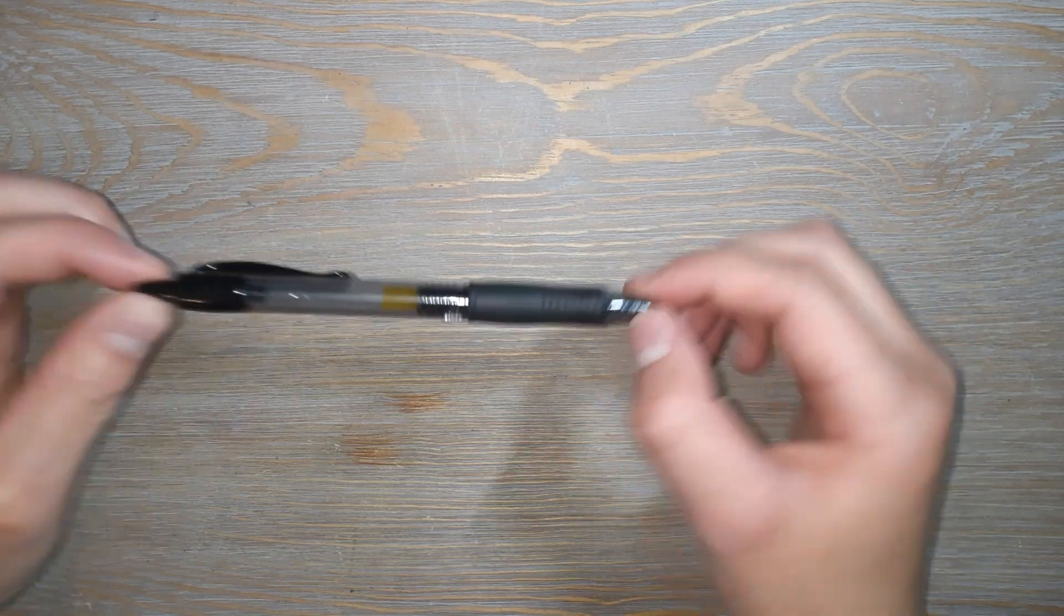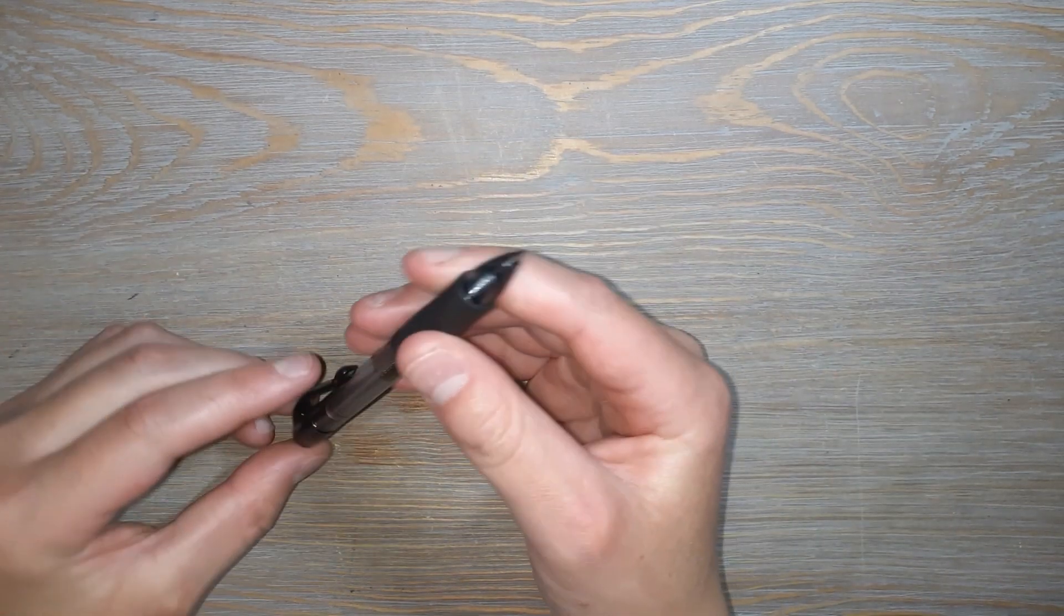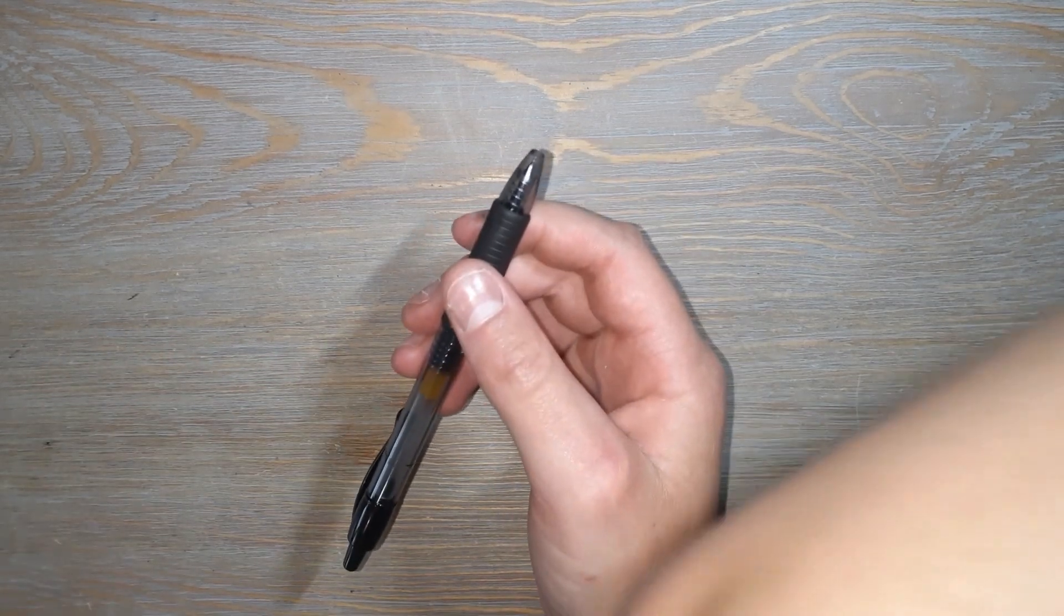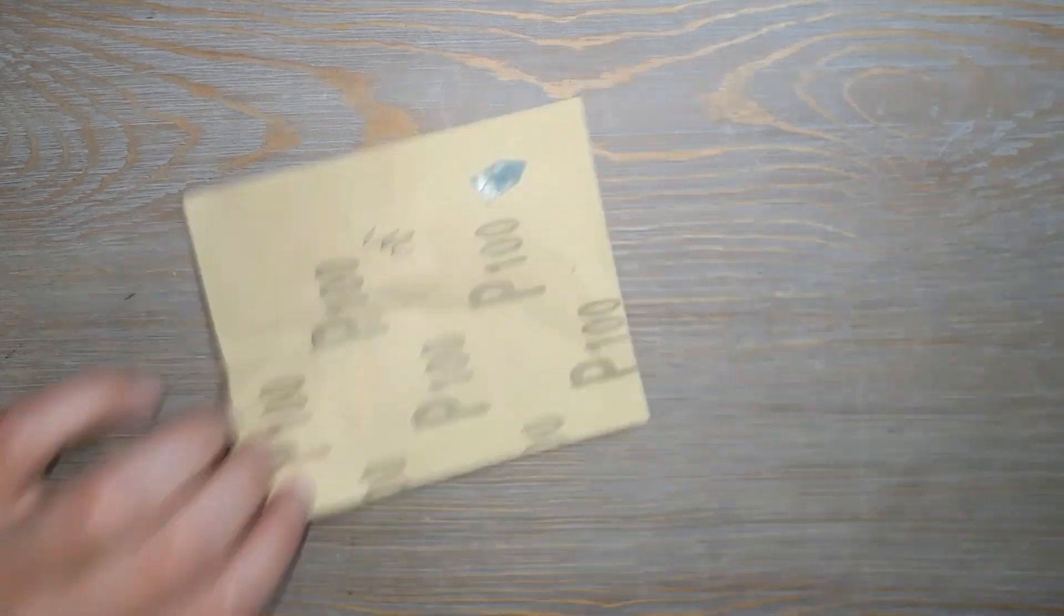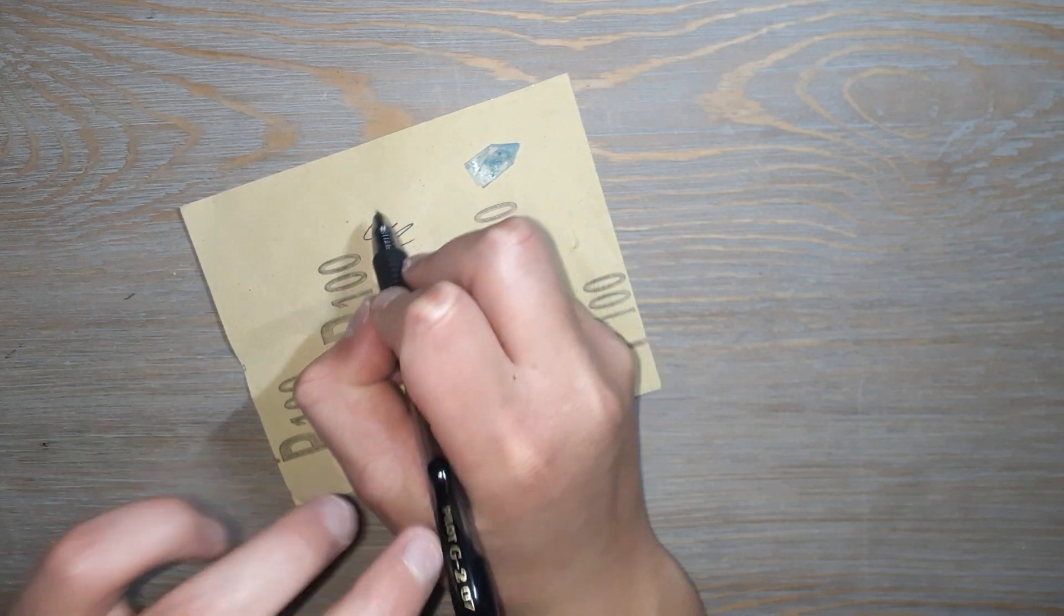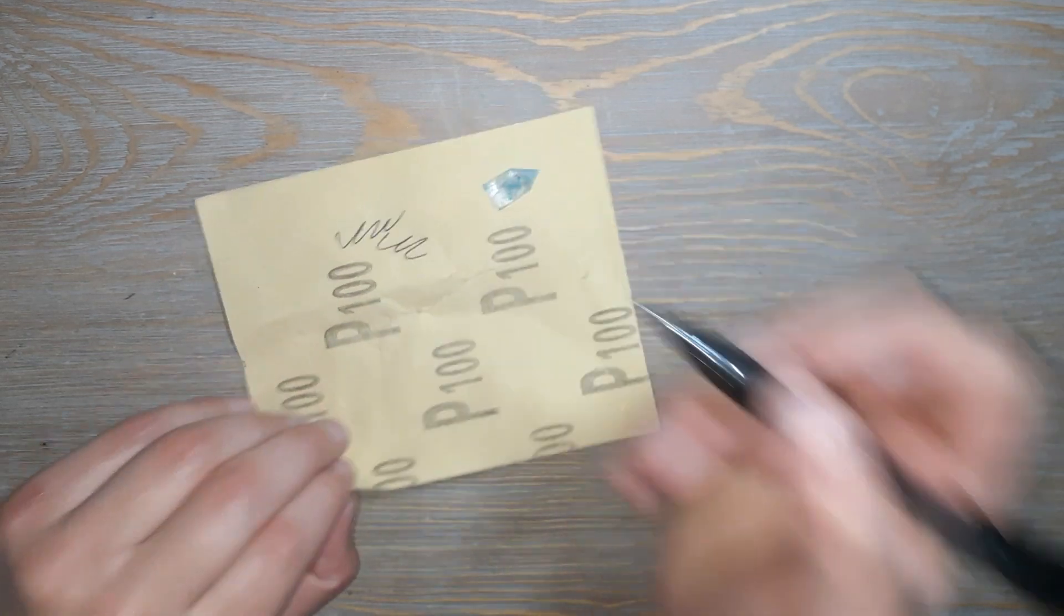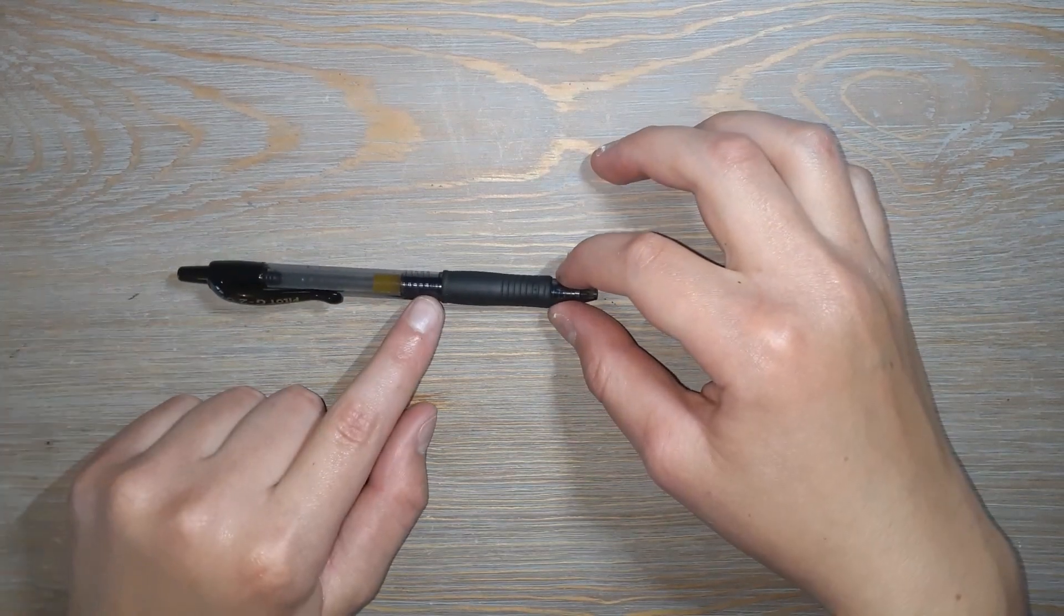In today's video, I'm going to explain how to take apart this pen right here. As you can see, it writes pretty well. So first off, you're going to identify where there's a spiral going upwards.